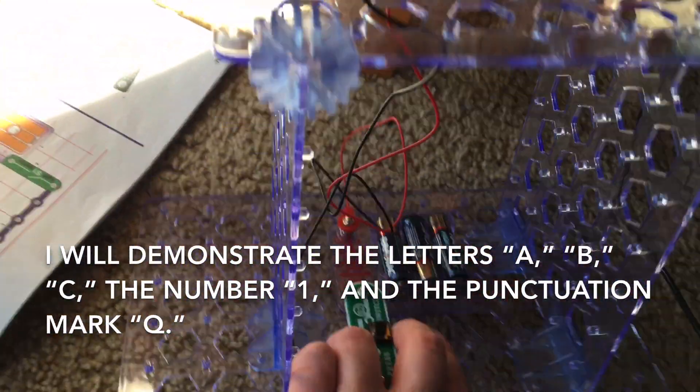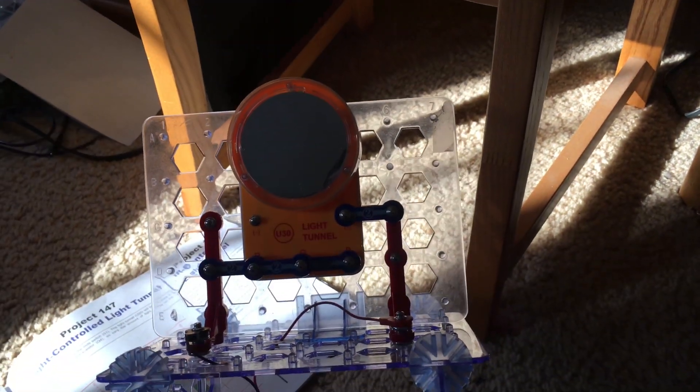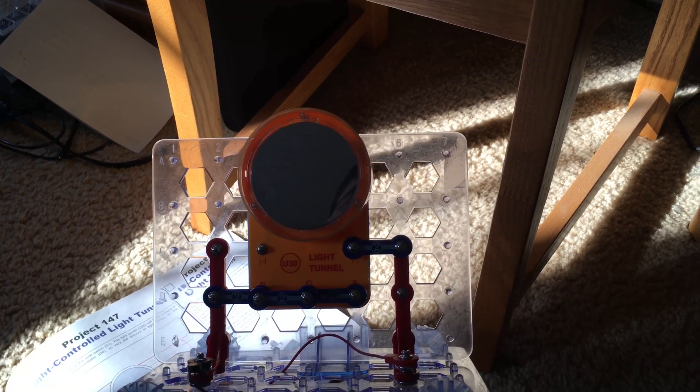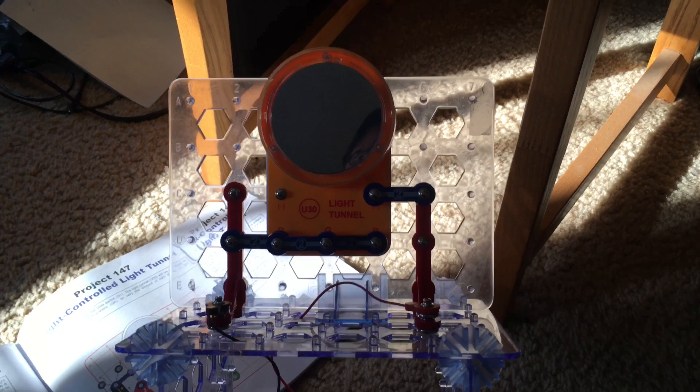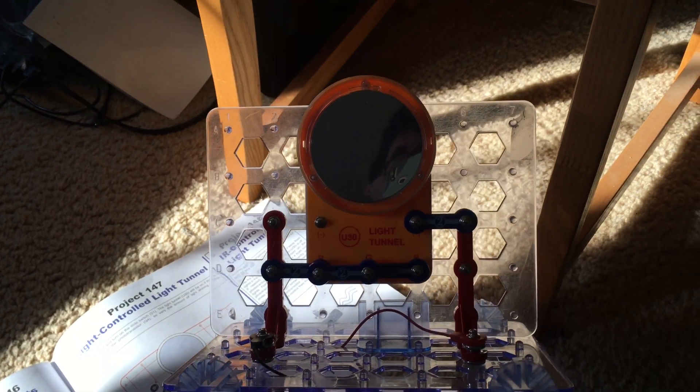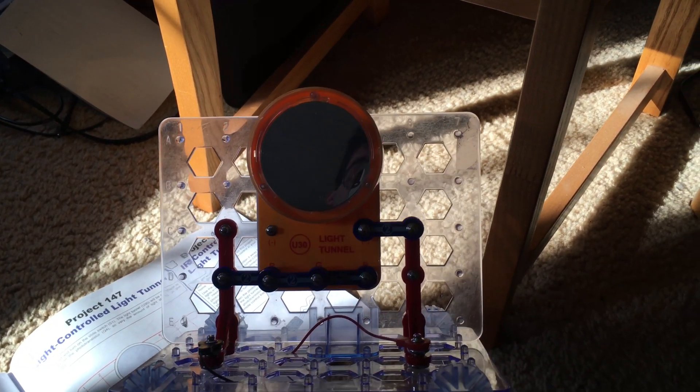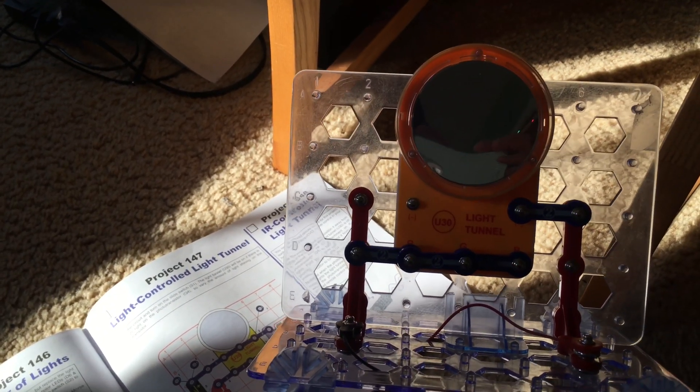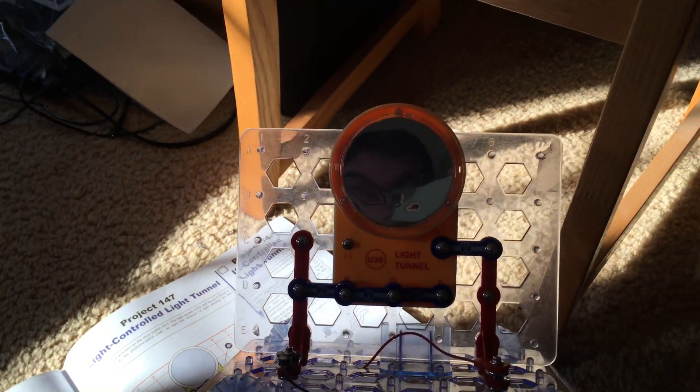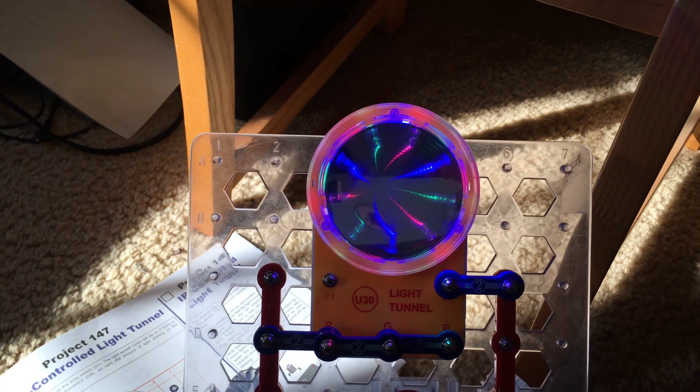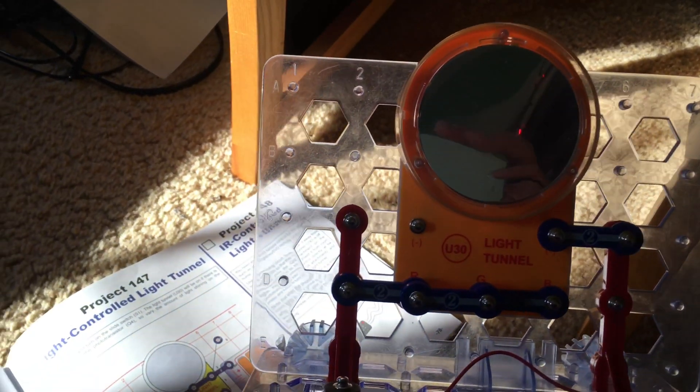For instance, if I want to do the letter A, which is a dot followed by a dash, I would hit the press switch once quickly and then follow with a longer press, which would represent a dash. Now for B, it would be one dash and three dots. And then for C, it will be a dash, a dot, followed by another dash and dot. I'm not going to do all of the symbols, but I might do the number one and then do a question mark.